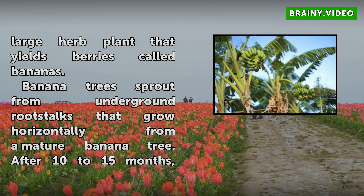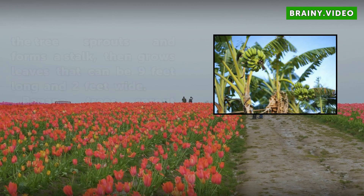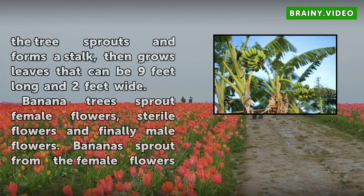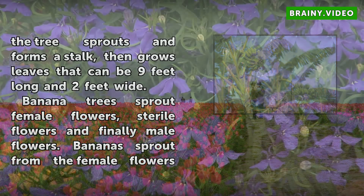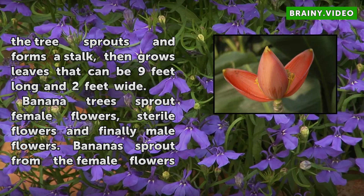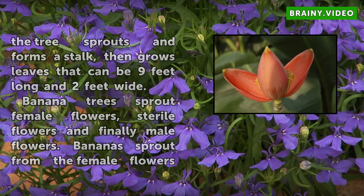After 10 to 15 months, the tree sprouts and forms a stalk, then grows leaves that can be 9 feet long and 2 feet wide. Banana trees sprout female flowers, sterile flowers, and finally male flowers. Bananas sprout from the female flowers without pollination.